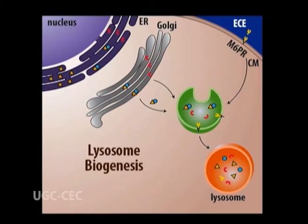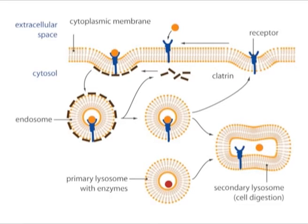The Golgi apparatus forms tiny vesicles that separate or bud from the ends of Golgi cisternae. Vesicles formed in this way that contain hydrolytic enzymes are called primary lysosomes. Secondary lysosomes are formed when primary lysosomes fuse with other membrane-bound vesicles. Upon leaving the Golgi apparatus, the lysosomal enzyme-filled vesicle fuses with a late endosome, a relatively acidic organelle with an approximately pH of 5.5.